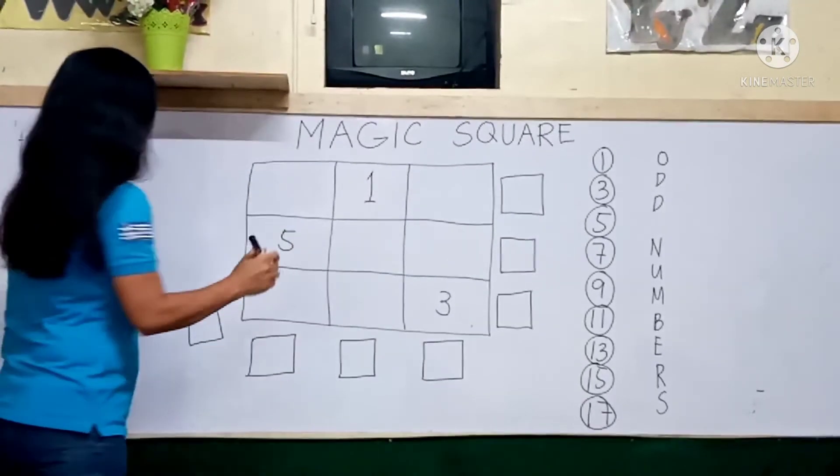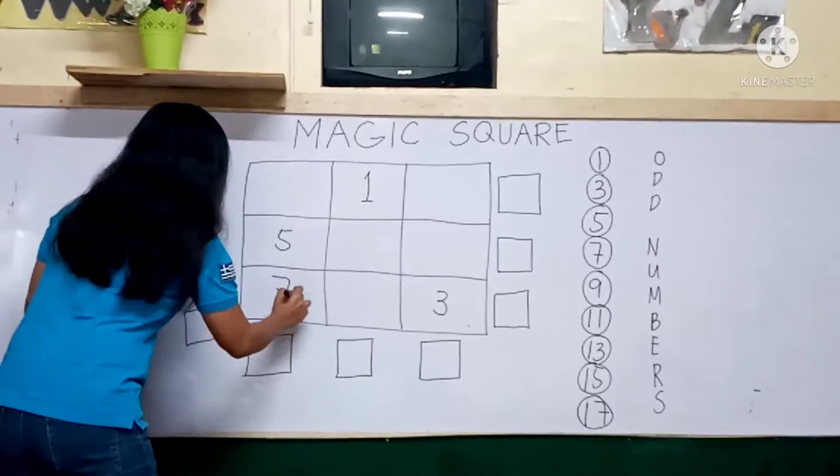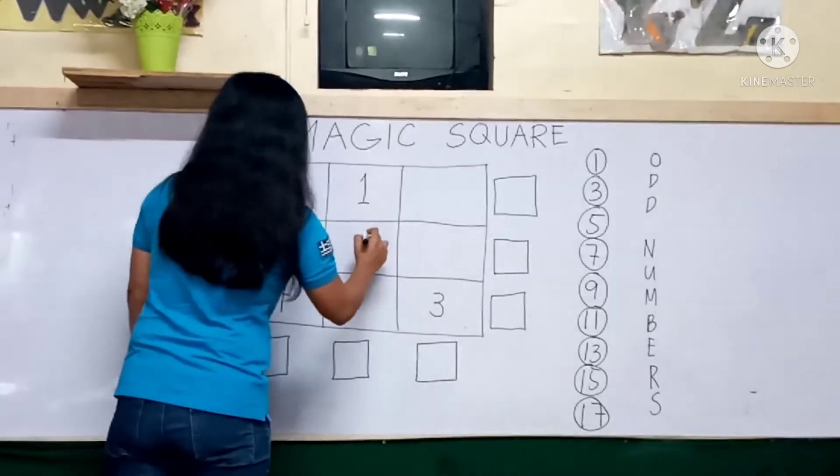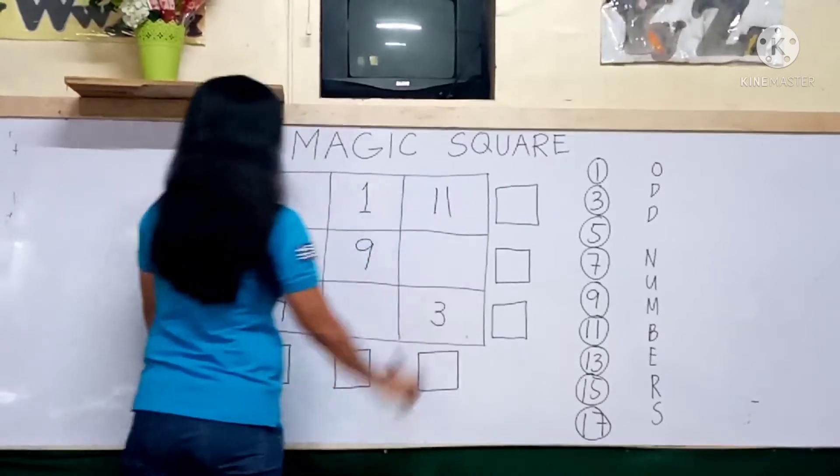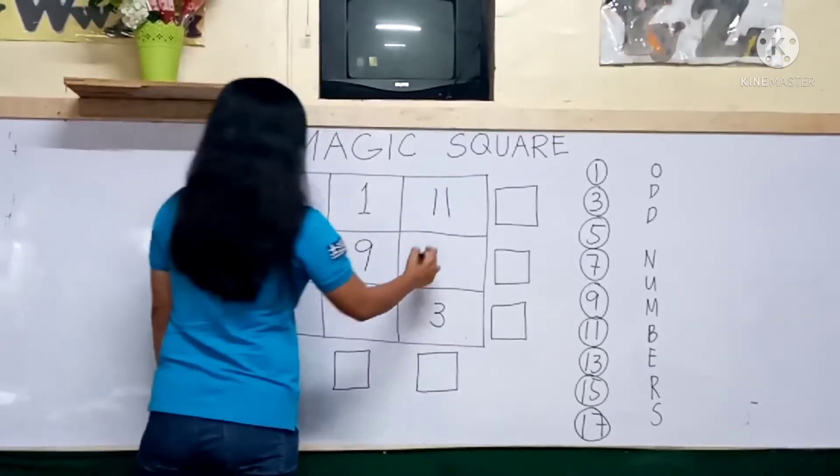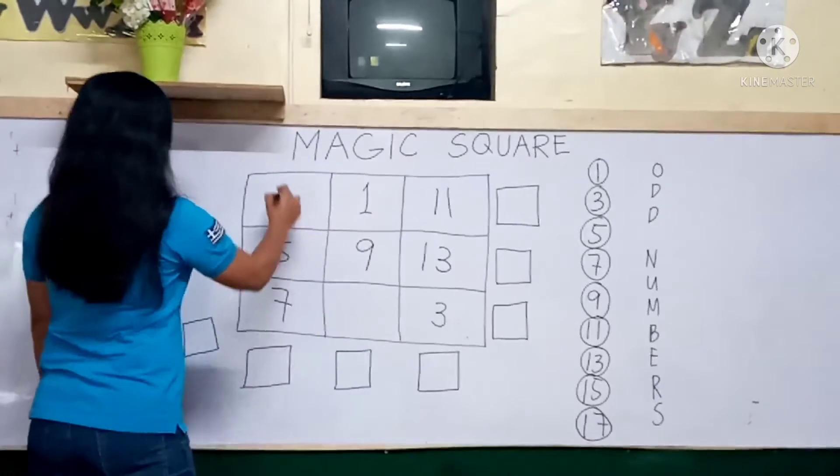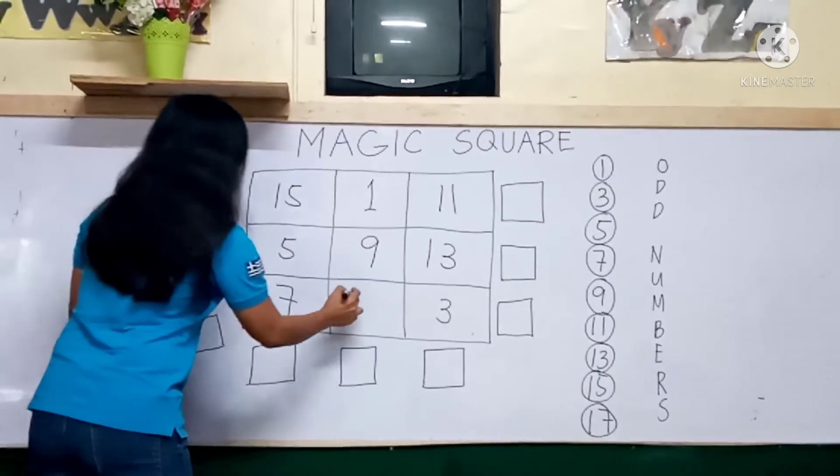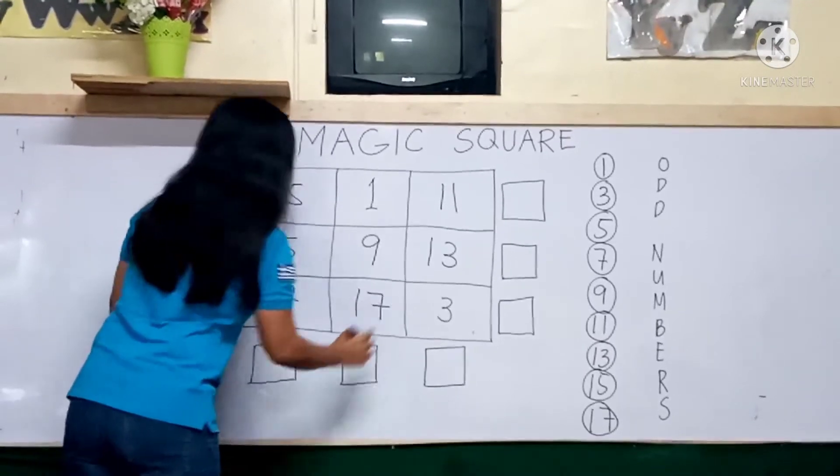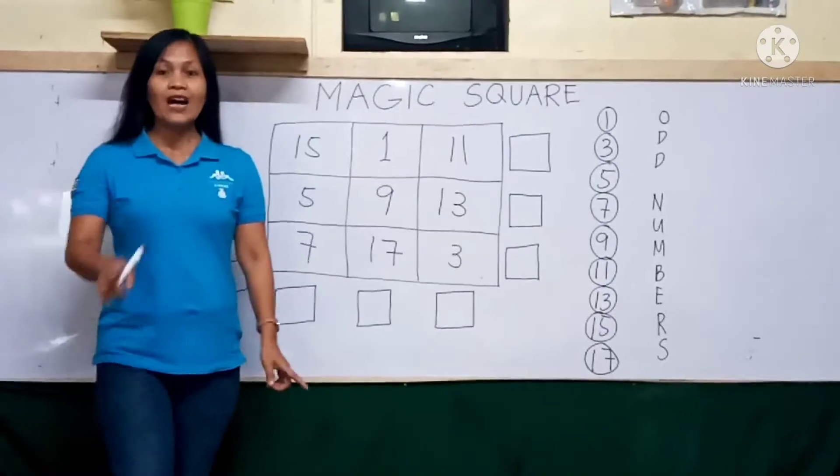So, the next is 7, then 9, then 11, and then 13, and then 15. Lastly, we have the 17 in the last row.